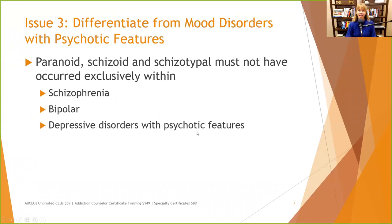Issue number three: we want to differentiate mood disorders with psychotic features from personality disorders. Paranoid, schizoid, and schizotypal must not have occurred exclusively within episodes of schizophrenia, bipolar, or any depressive disorder with psychotic features. We want to make sure it's not an enduring mood episode.